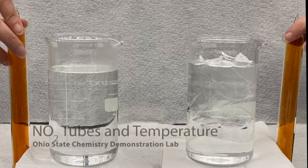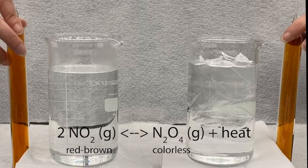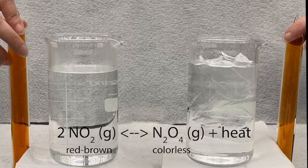The conversion of red-brown NO2 to colorless N2O4 is an exothermic reaction. We're going to use Le Chatelier's principle to predict the shift of the reaction with respect to temperature and also the color.